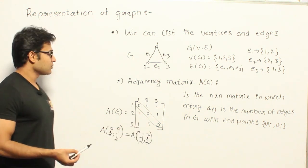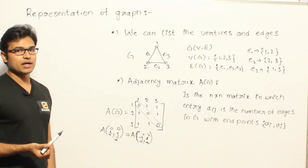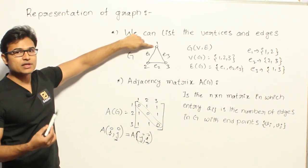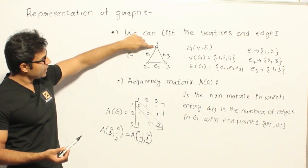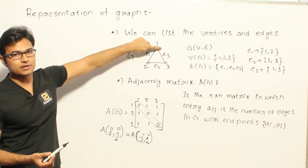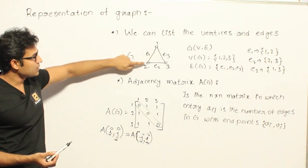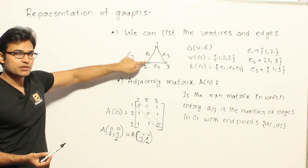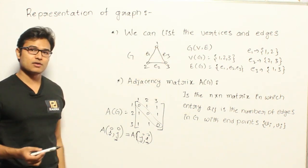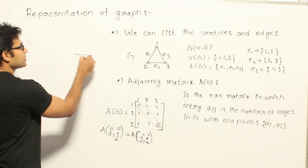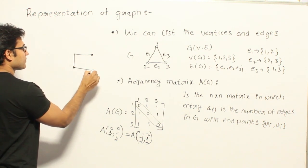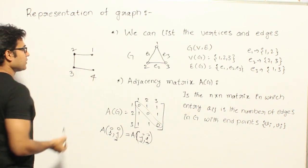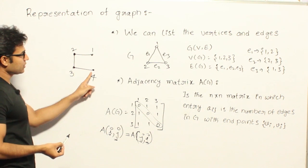For every undirected simple graph, A equals A-transpose and the leading diagonal contains all zeros. There is also the property called the degree of a vertex — the number of edges incident on that vertex. For vertex 1, edges E1 and E3 are incident on it, so degree of vertex 1 is 2. Vertex 2 has edges E1 and E2, so degree 2. In a different graph with vertices 1, 2, 3, 4: degree of vertex 1 is 1, vertex 2 is 2, vertex 3 is 2, vertex 4 is 1.